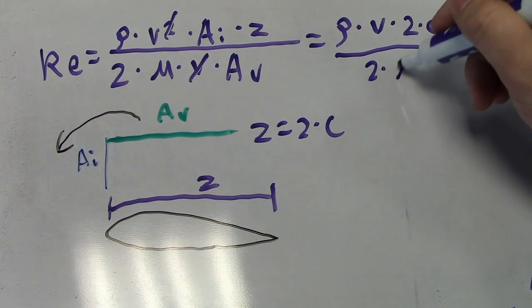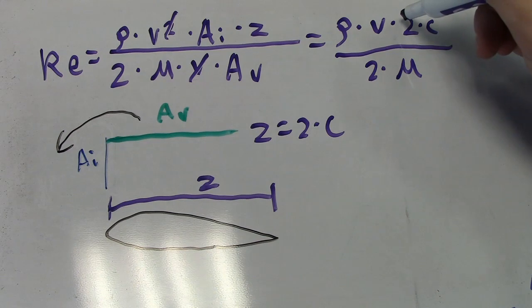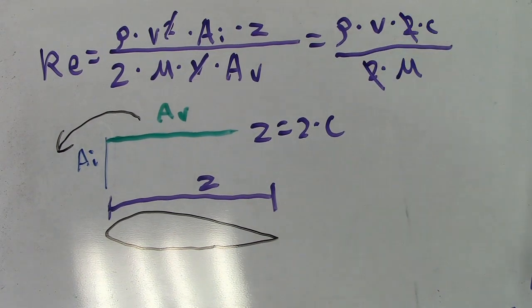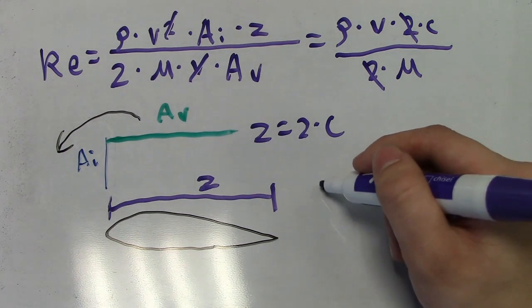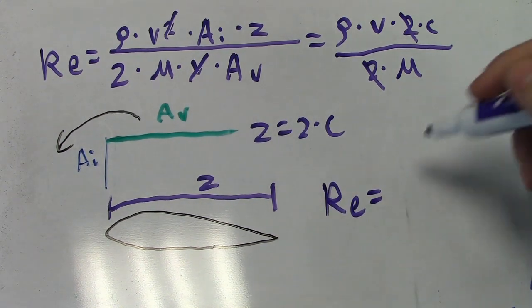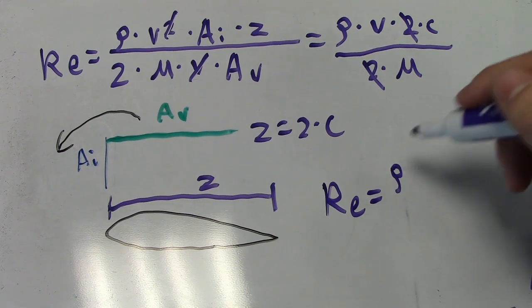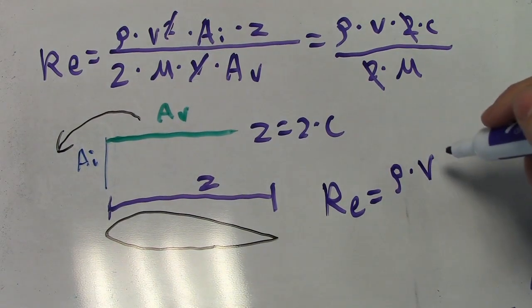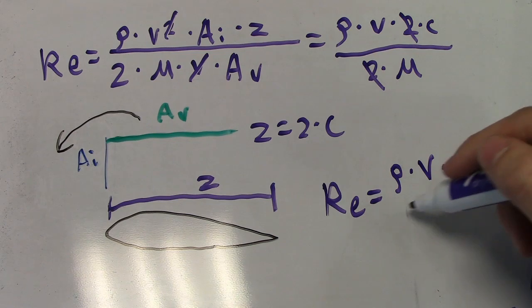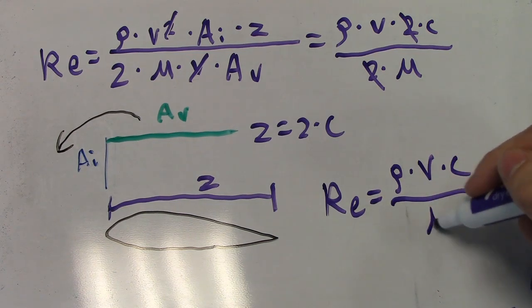Furthermore, since we have a 2 in the numerator now, we can get rid of the 1 half, which is why it was 2 times c. In the end, after canceling everything, we get Reynolds number is equal to the air density, rho, times the velocity, v, times the chord length, c, divided by the air viscosity, mu.